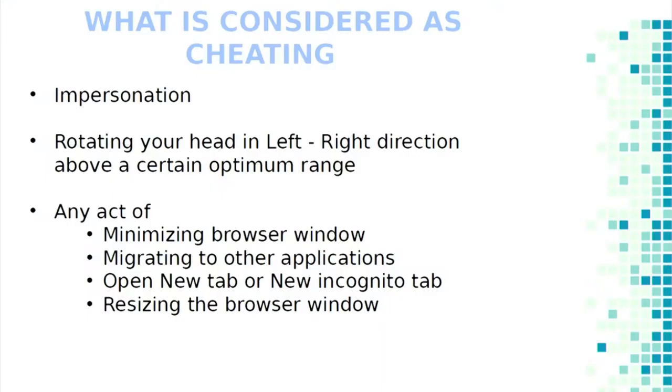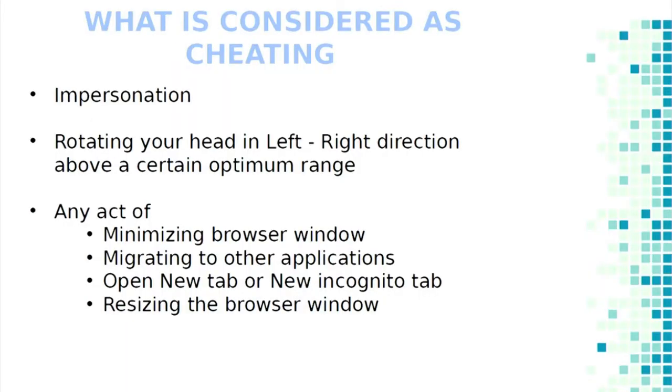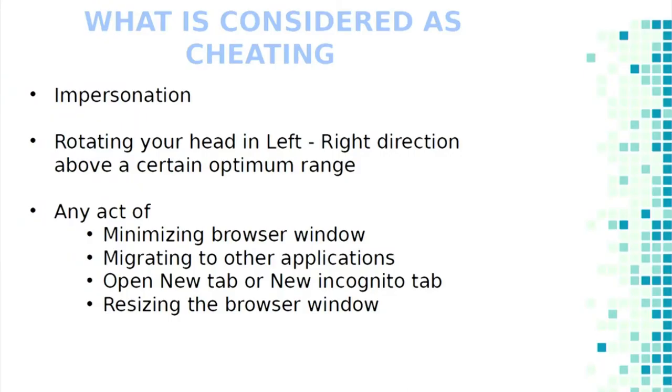Coming to activities considered suspicious by our system: the first one is impersonation — if some other person writes the exam who is not enrolled in the course. The second is rotating the head left or right beyond a certain optimal range, because a student can look to the side where material is placed and copy from it.